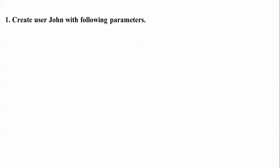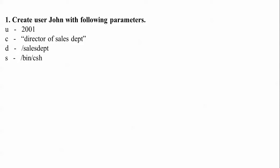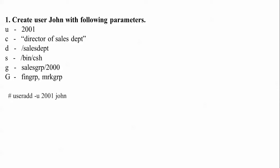First, I'm going to create a user with the name John with the following parameters: the user ID is 2001, -c is the comment for the sales department group, -g is the primary group which is the sales group with ID 2000, and capital -G is for secondary groups like the free group and marketing group.